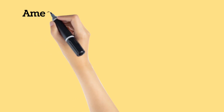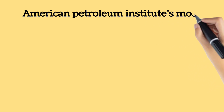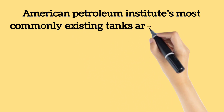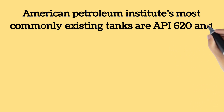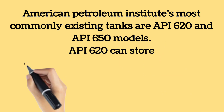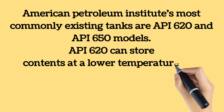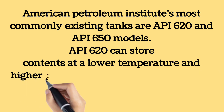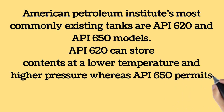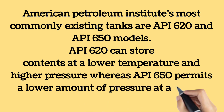The most popular tanks available on the market today are the API 620 and API 650 models. API 620 regulates the design and manufacture of large steel low-pressure storage tanks, usually larger than 300 feet in diameter. By contrast, API standard 650 is typically used for carbon, stainless steel and aluminum tanks located in terminals, refineries, pipelines and other process facilities. API 620 can store contents at a lower temperature and higher pressure, whereas API 650 permits a lower amount of pressure at a higher temperature.